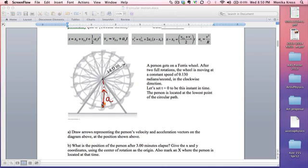The acceleration vector A doesn't have to touch the center of the circle, but it does have to originate at the point we're interested in. In this particular problem it says draw arrows representing the person's velocity and acceleration vectors on the diagram above at the position shown. And the person is located at the lowest point of the circular path. So the acceleration vector points towards the center of the circle and the velocity vector, because it's clockwise, points in this direction, and it's always tangent to the circle.